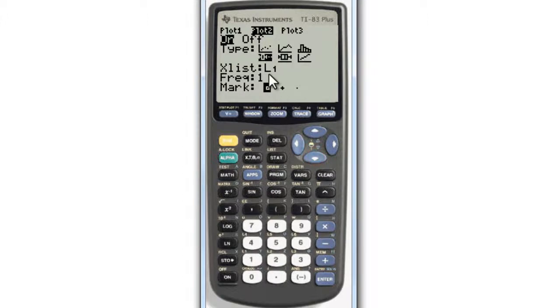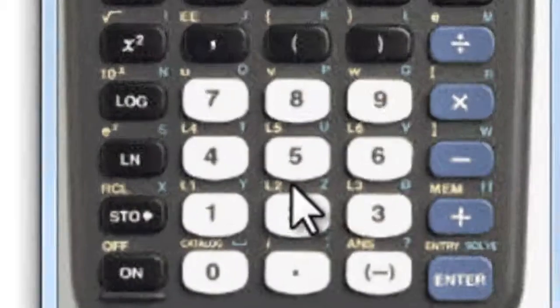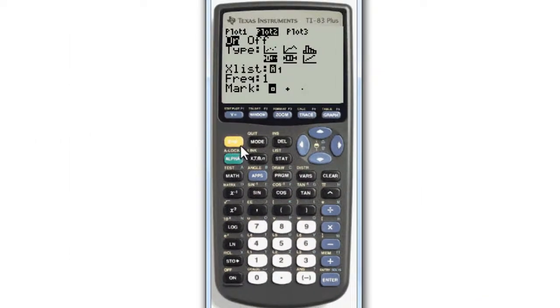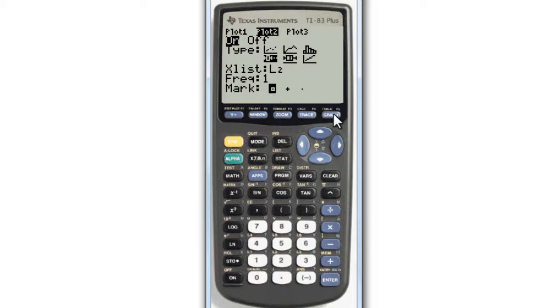Moving down, we don't want to graph L1 this time. We want to graph L2, which is listed next to the 2 button. Press 2nd, 2, and that gives us L2 on this menu. We can use the same marker. Now press GRAPH, and there you have both box plots drawn next to each other for comparison.